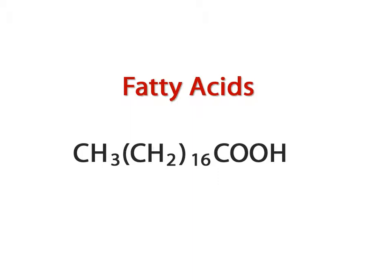Then we put a carbon and hydrogen with a subscript 2 in brackets, and count the number of carbons with 2 hydrogens attached to them in the molecule. We put that number as a subscript to the bracket to indicate the total. Finally, we write the carboxylic acid ending, which is 1 carbon and 2 oxygens in a row followed by 1 hydrogen atom. Now we have a chemical formula for a fatty acid — but what kind of fatty acid?